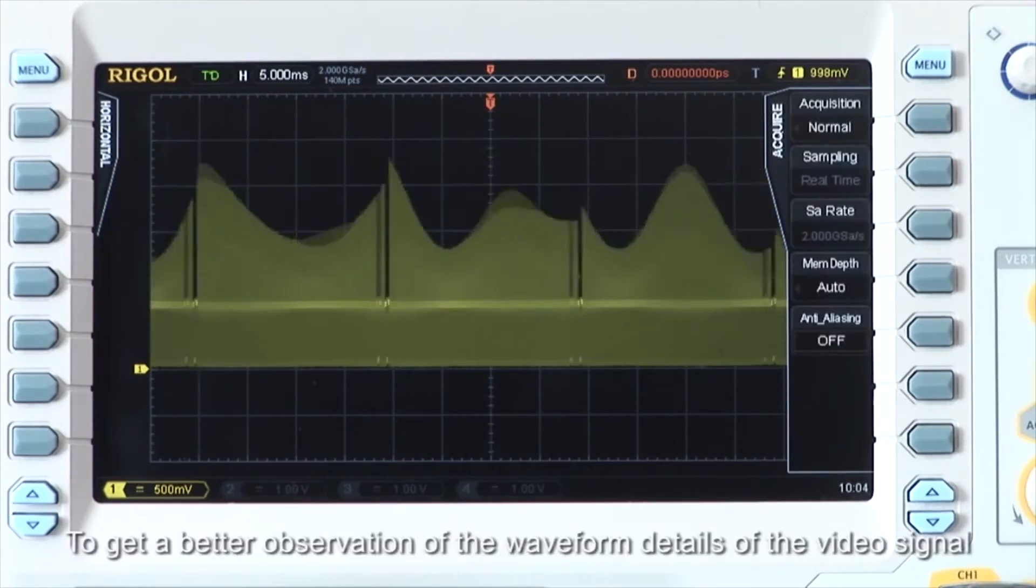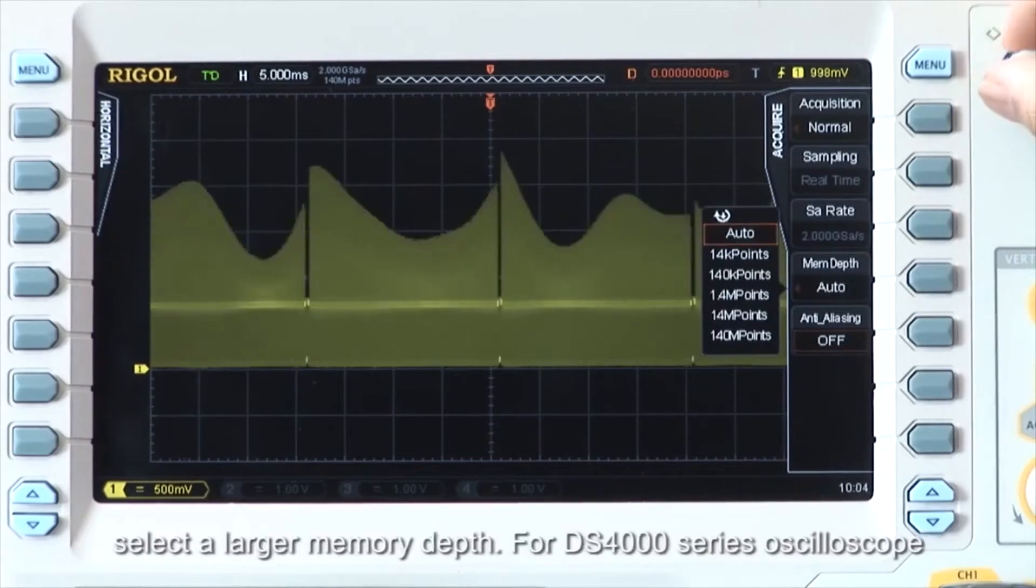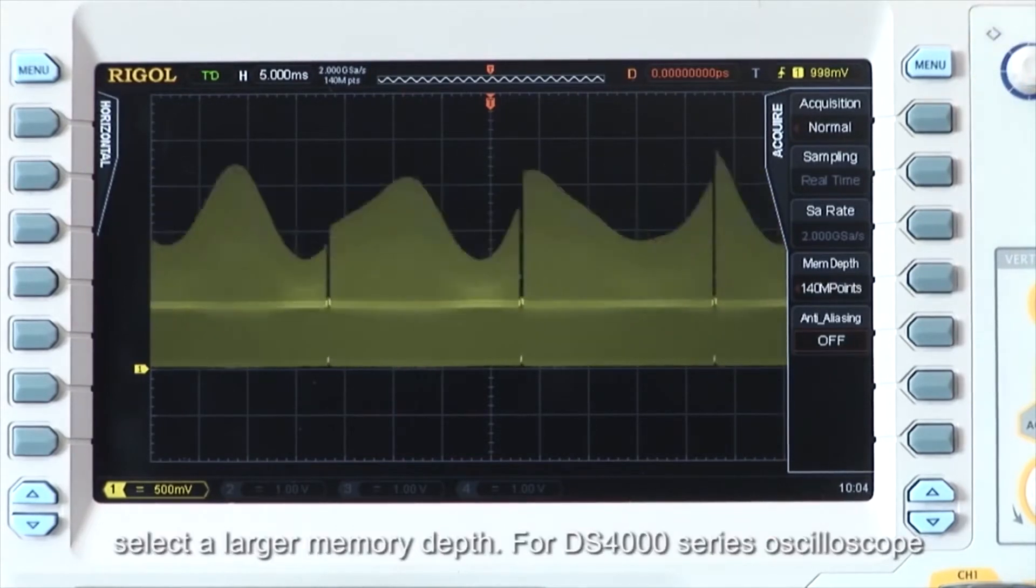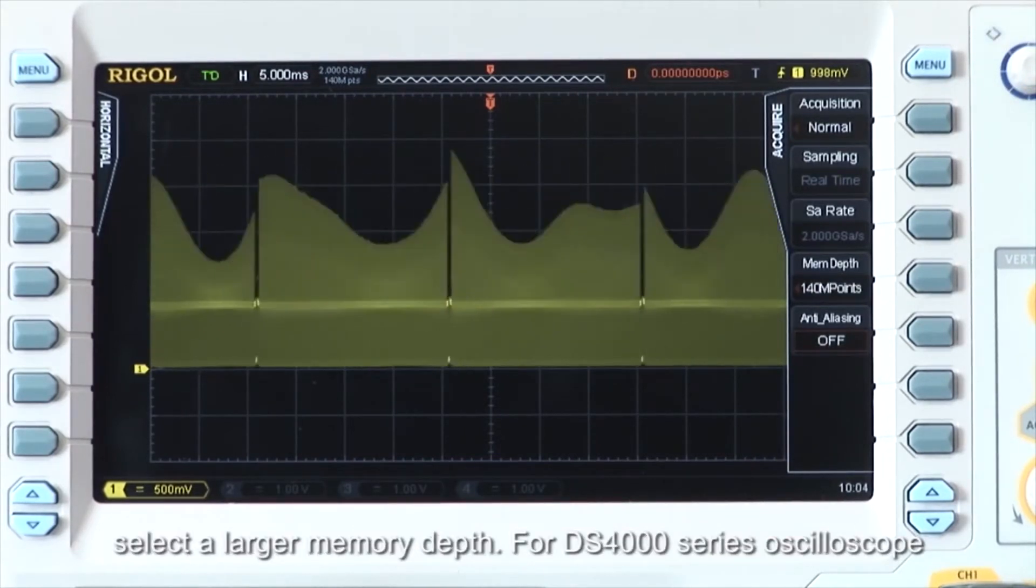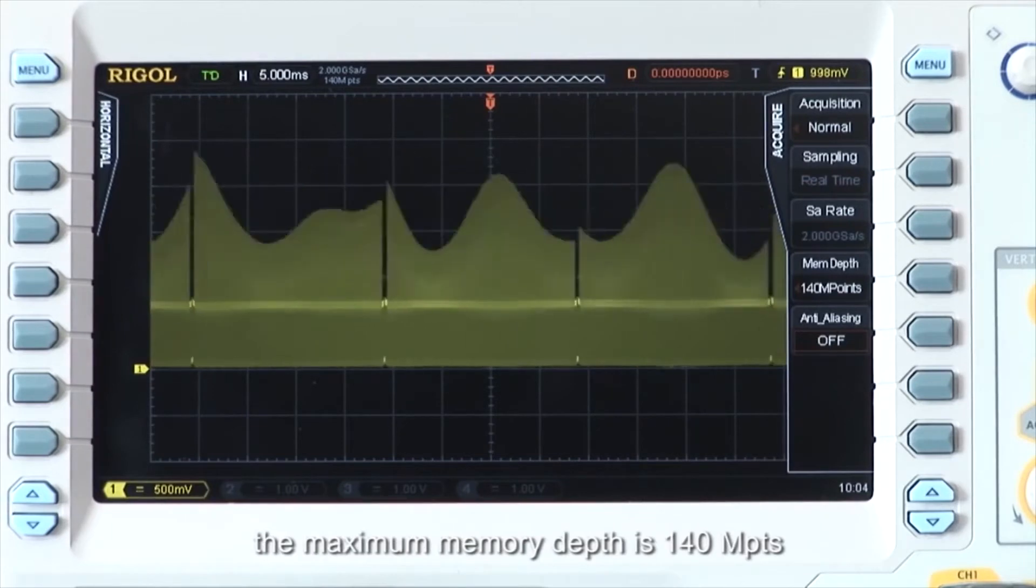To get a better observation of the waveform details of the video signal, select a larger memory depth. For the DS4000 series, the maximum memory depth is 140 MPs.